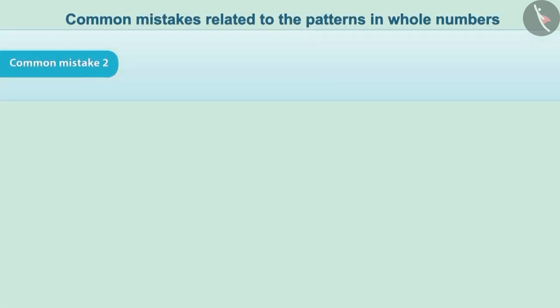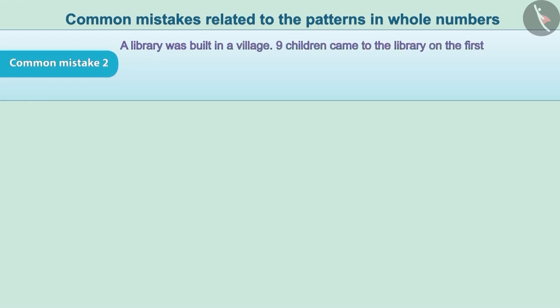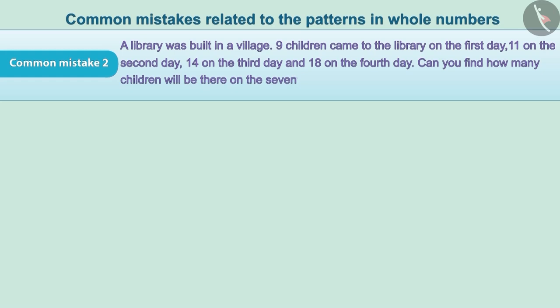Common Mistake 2. A library was built in a village. Nine children came to the library on the first day, 11 on the second day, 14 on the third day, and 18 on the fourth day. Following the same pattern, how many children will be there in the library on the seventh day?